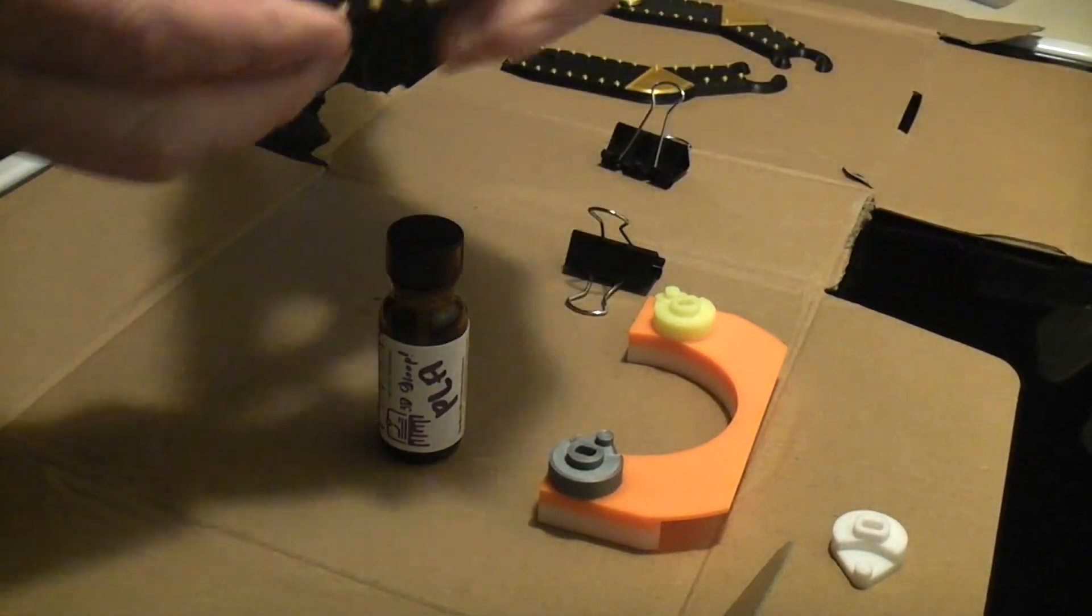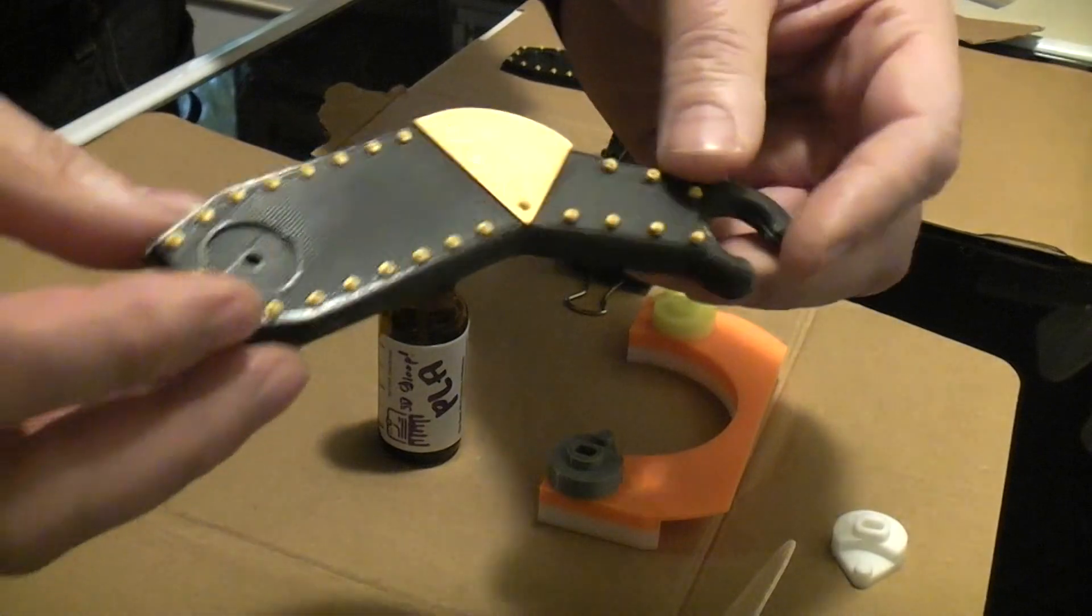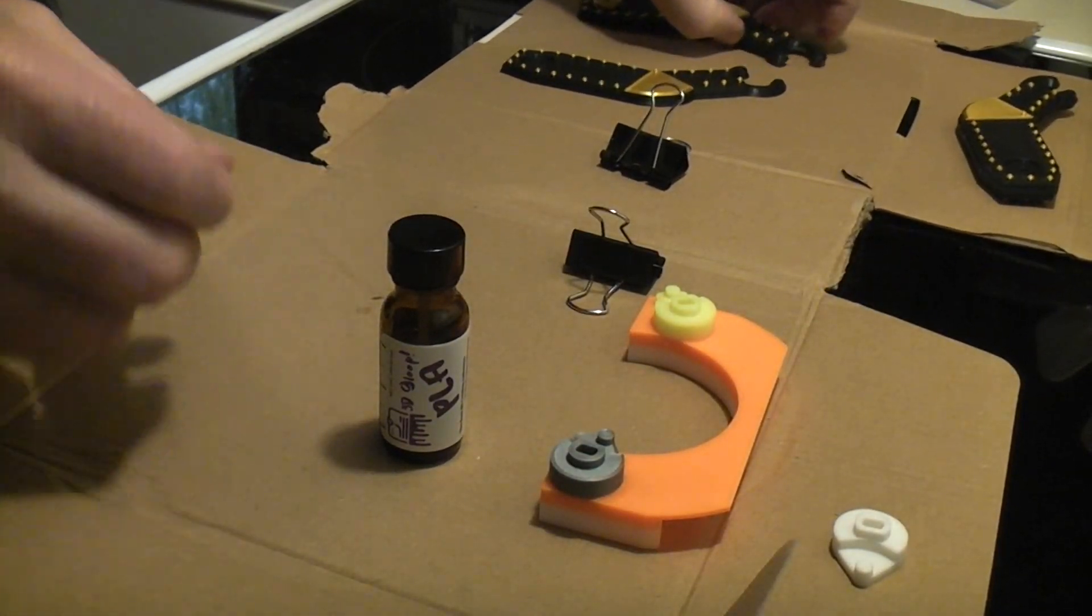I've glued a lot of things, for example, this is a robot arm, and it's two pieces. Let's just glue one together right now so you can see.